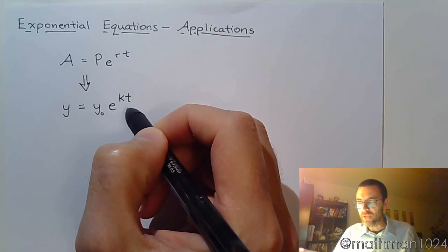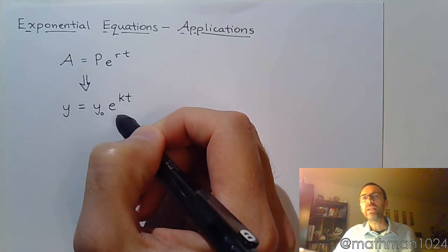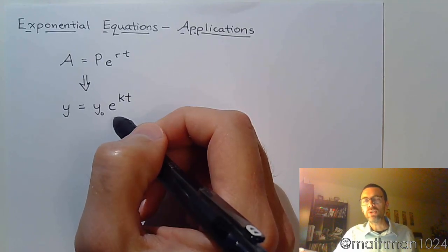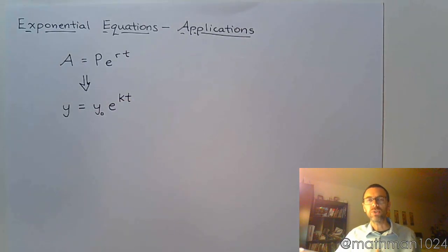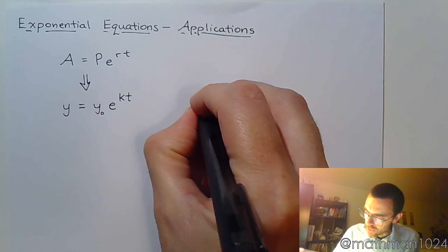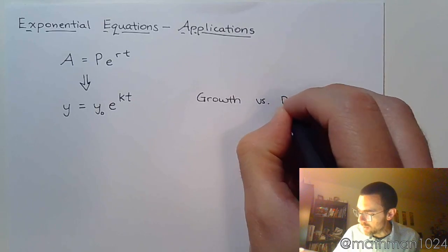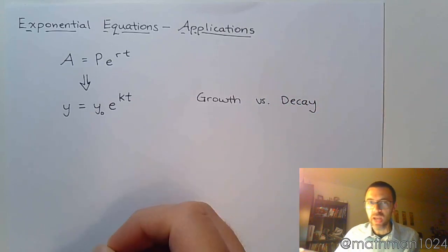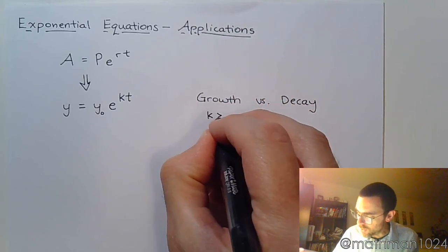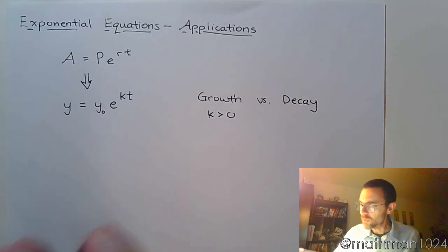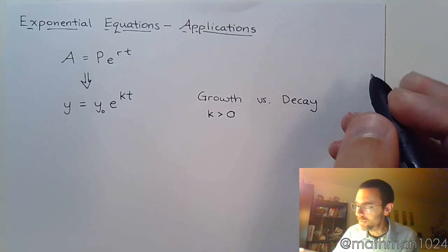E is still the Euler's constant. Instead of saying r for our rate, we're going to use k, and t is still measuring time. With these exponential equations, t is not always measured in years. Some situations involve time measured in minutes or hours because of how certain populations or scenarios are growing or decaying. The big thing is we're talking about either growth or decay. When you're talking about growth, that means you have a k value that's greater than zero.